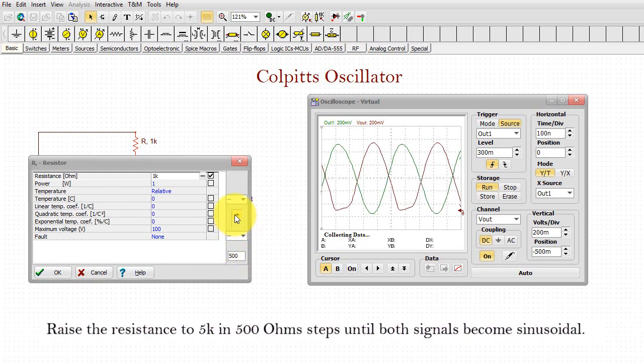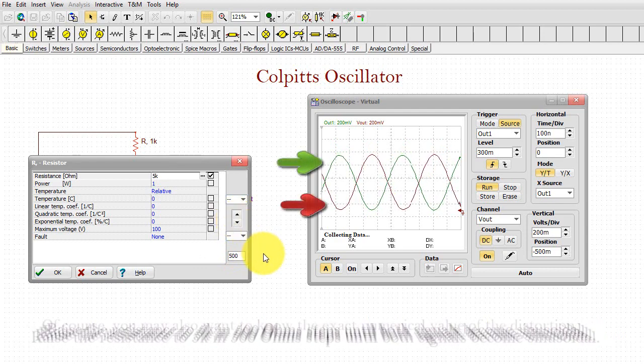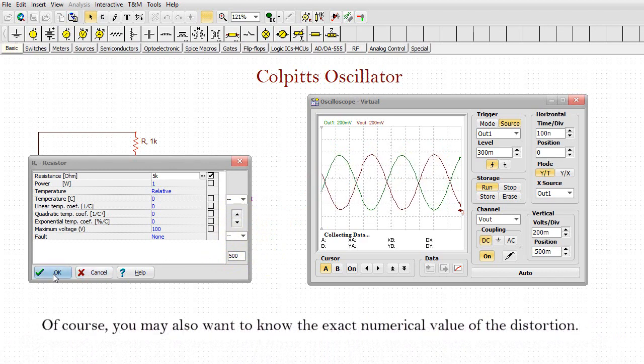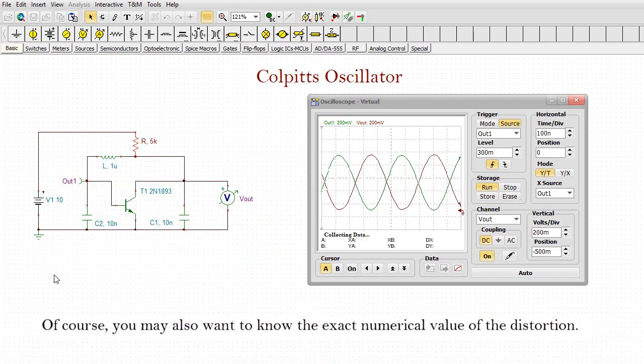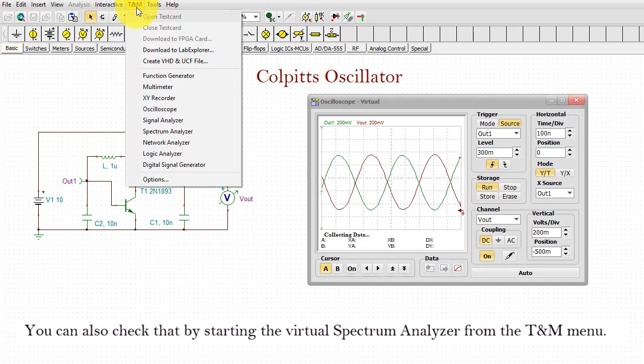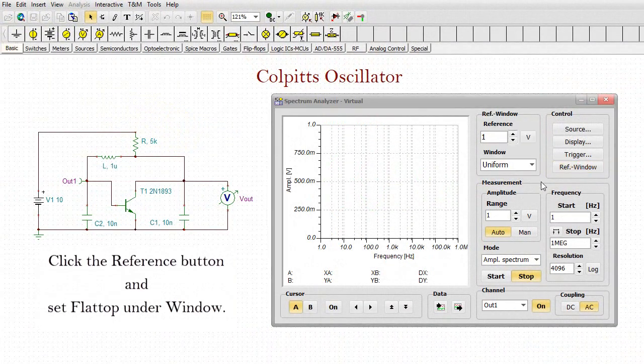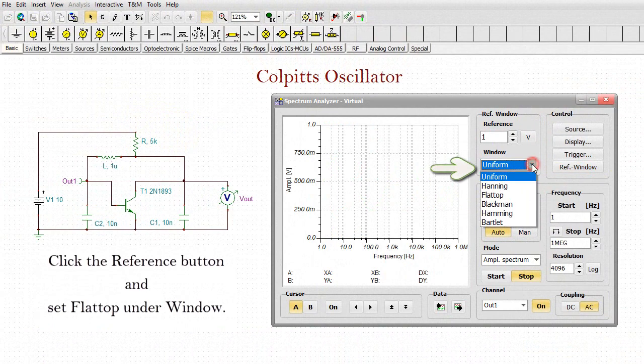Raise the resistance to 5K in 500 ohms steps until both signals become sinusoidal. Of course, you may also want to know the exact numerical value of the distortion. You can also check that by starting the Virtual Spectrum Analyzer from the TNM menu.